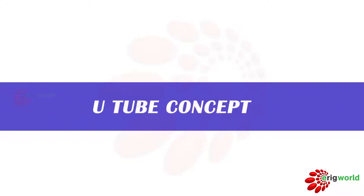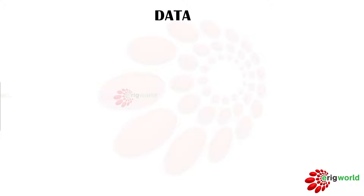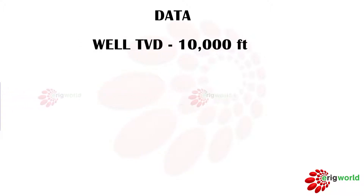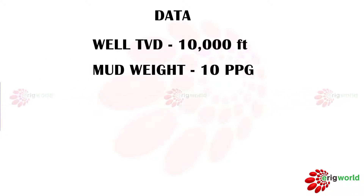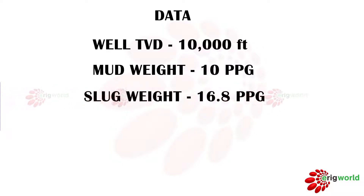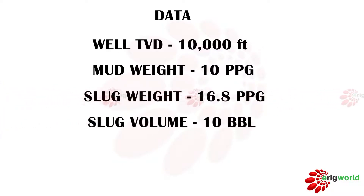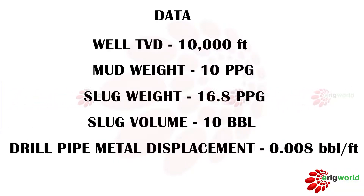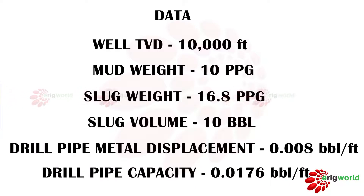U-tube Concept. Given data: well TVD 10,000 feet, mud weight 10 ppg, slug weight 16.8 ppg, slug volume 10 barrels, drill pipe metal displacement 0.008 barrel per foot, drill pipe capacity 0.0176 barrel per foot.